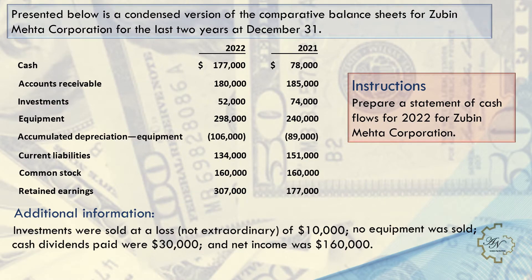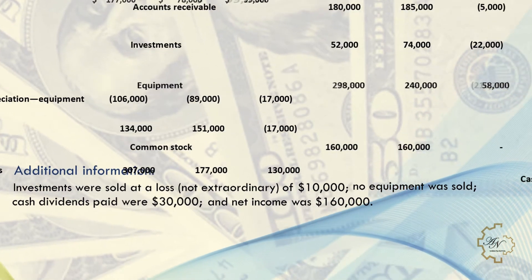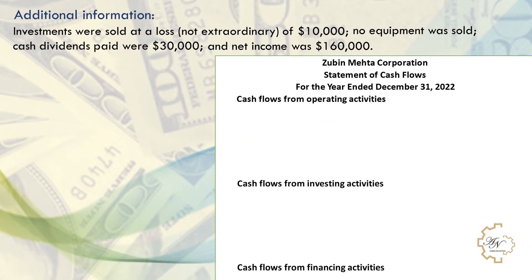Now let's move to the example. Presented below is a condensed version of comparative balance sheets for Zobin Meta Corporation for the last two years at December 31. The instruction is to prepare a statement of cash flows for 2022 for Zobin Meta Corporation. We will start by calculating which accounts increased and decreased. First, place the titles and arrange the statement into its three sections: cash flows from operating activities, investing activities, and financing activities.